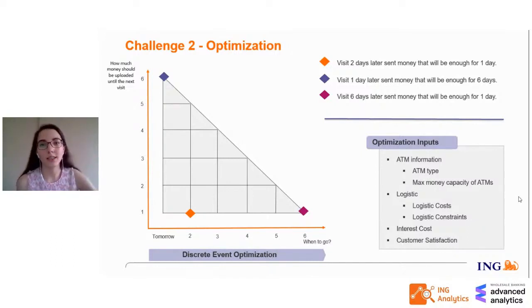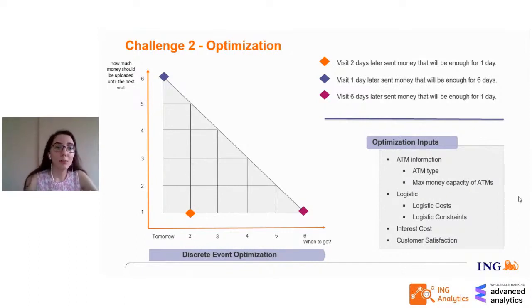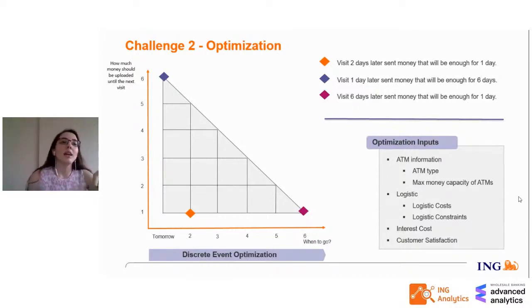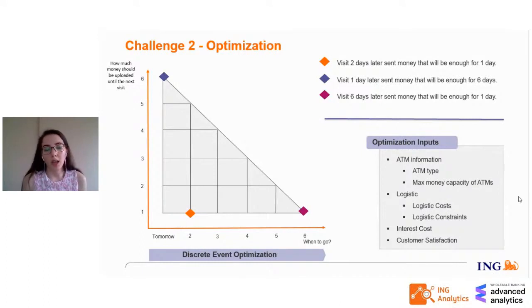For example, take the orange point: it says visit the ATM two days later and put in enough money for one day, meaning the next visit will be three days later. The purple point says go tomorrow and load money sufficient for six days, so the next visit will be seven days later. It cannot say go tomorrow and load for seven or eight days because seven days is our horizon. Also, only tomorrow's plan is truly important, because other plans can be updated with daily-renewed prediction models.